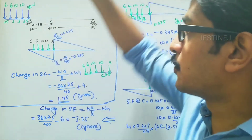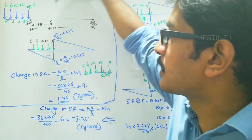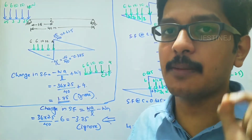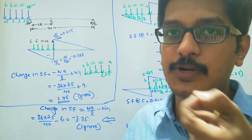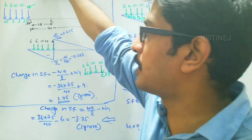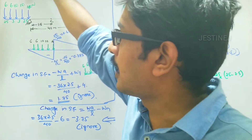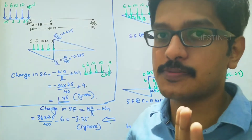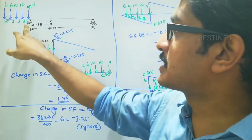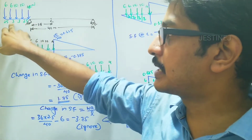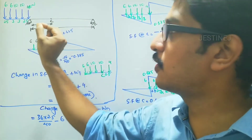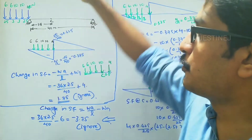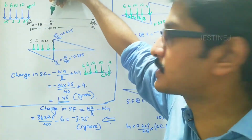In the question, a simply supported beam with a total span length of 40 meters is given, with a train of constant loads. A series of constant loads is traveling arranged in this format: 4 kN in front, then 10, 10, 6, and 6 kN — five total loads traveling in series with spacing of 2.5, 3, 3, and 2.5 meters respectively. We have to find the maximum shear force at point C.